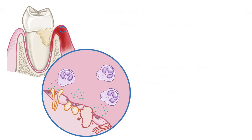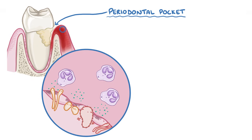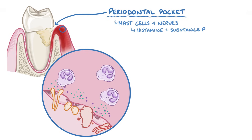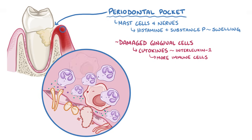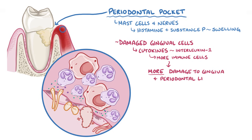Either way, the pathogenic bacteria within the subgingival dental plaque create a periodontal pocket and damage gingival cells in the process. Local mast cells and nerves release chemicals like histamine and substance P, which cause dilation of local blood vessels, resulting in swelling of the gingiva. Damaged gingival cells release additional cytokines like interleukin-1, which brings more immune cells to the area, like neutrophils and macrophages. The body's immune response causes even more damage to the gingiva and periodontal ligament, ultimately loosening the tooth.